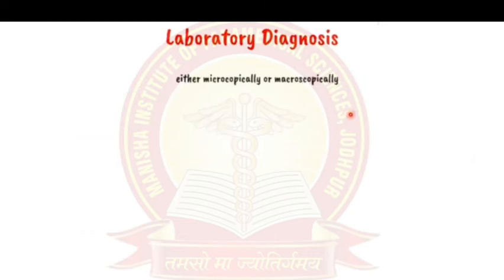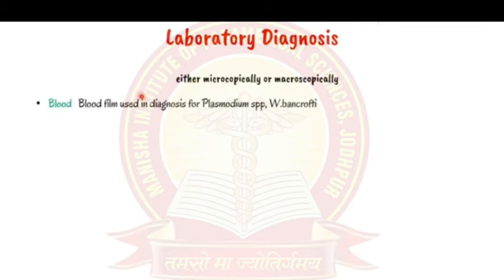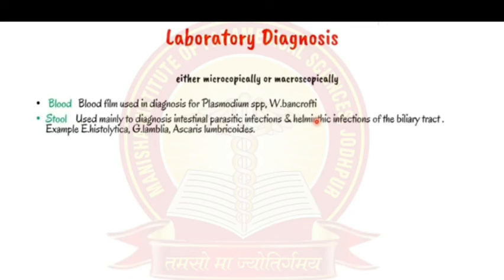Laboratory diagnosis can be macroscopic or microscopic. Blood films can diagnose Plasmodium vivax and Wuchereria bancrofti. Stool examination — macroscopically — can assess texture, smell, presence of blood, mucus, or fat. Adult Ascaris lumbricoides worms of 15 to 30 centimeters may be visible directly in stool.